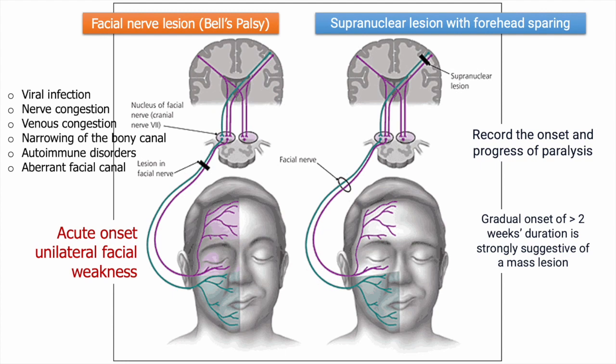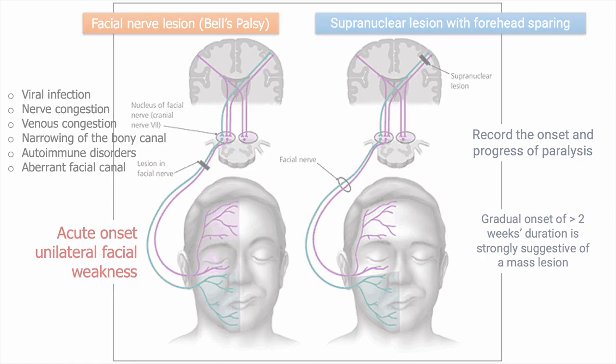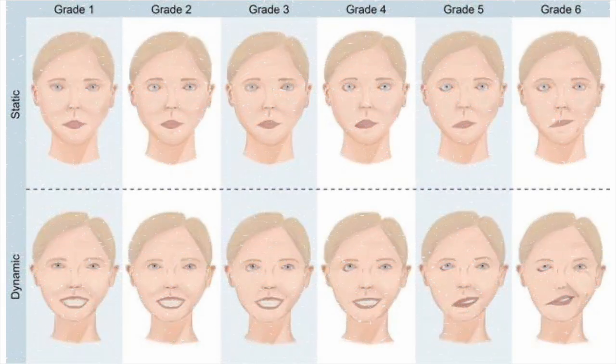A careful history of onset and progress of paralysis is important. A patient with acute onset of unilateral facial weakness most likely has Bell's palsy, whereas a gradual onset of more than two weeks duration is strongly suggestive of a mass lesion. Regarding etiology, the most popular hypothesis is viral infection, though it is different from herpes simplex or zoster. Other proposed theories include physiologic compression of the nerve due to arterial spasm, venous congestion or ischemia, narrowing of the bony canal, autoimmune disorders, and the presence of an aberrant facial canal suggesting a familial tendency.